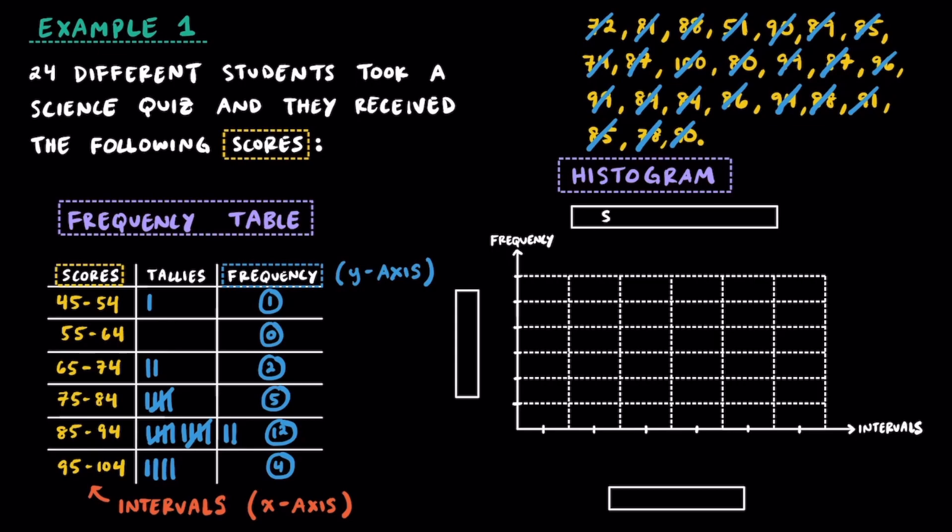Throw on a title for the histogram, something super creative like, I don't know, quiz score. Label the x-axis as the scores, those would be our intervals, and our frequency, or the y-axis, we can label as the number of students.